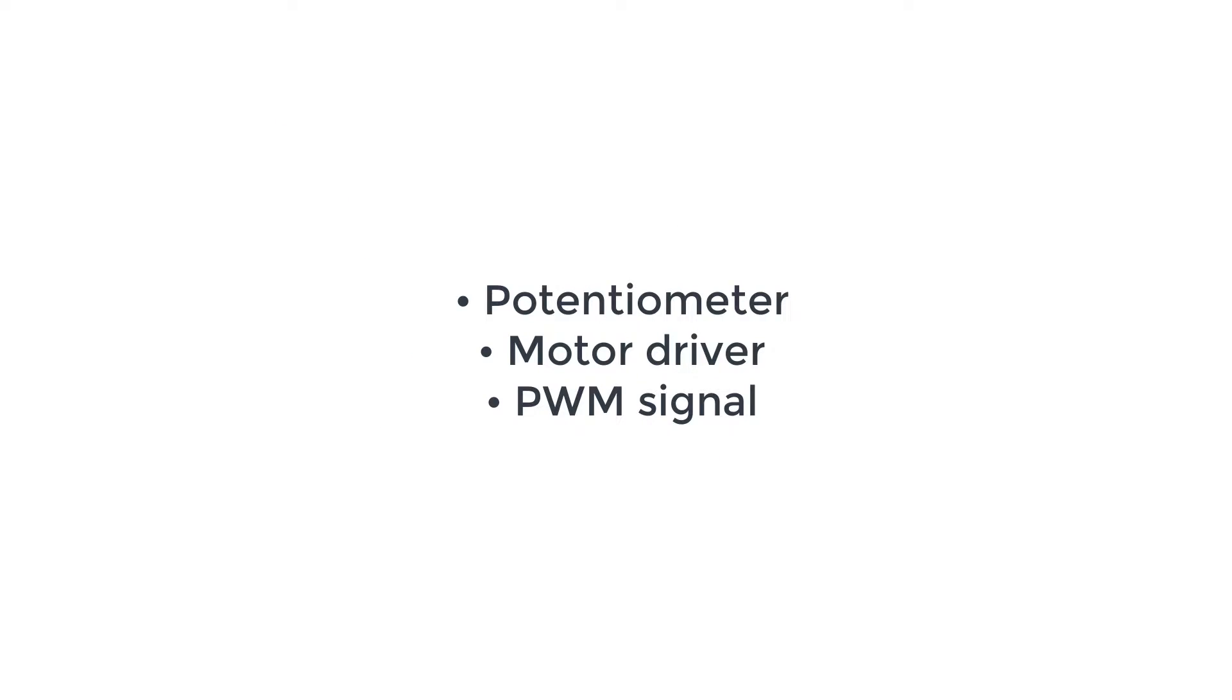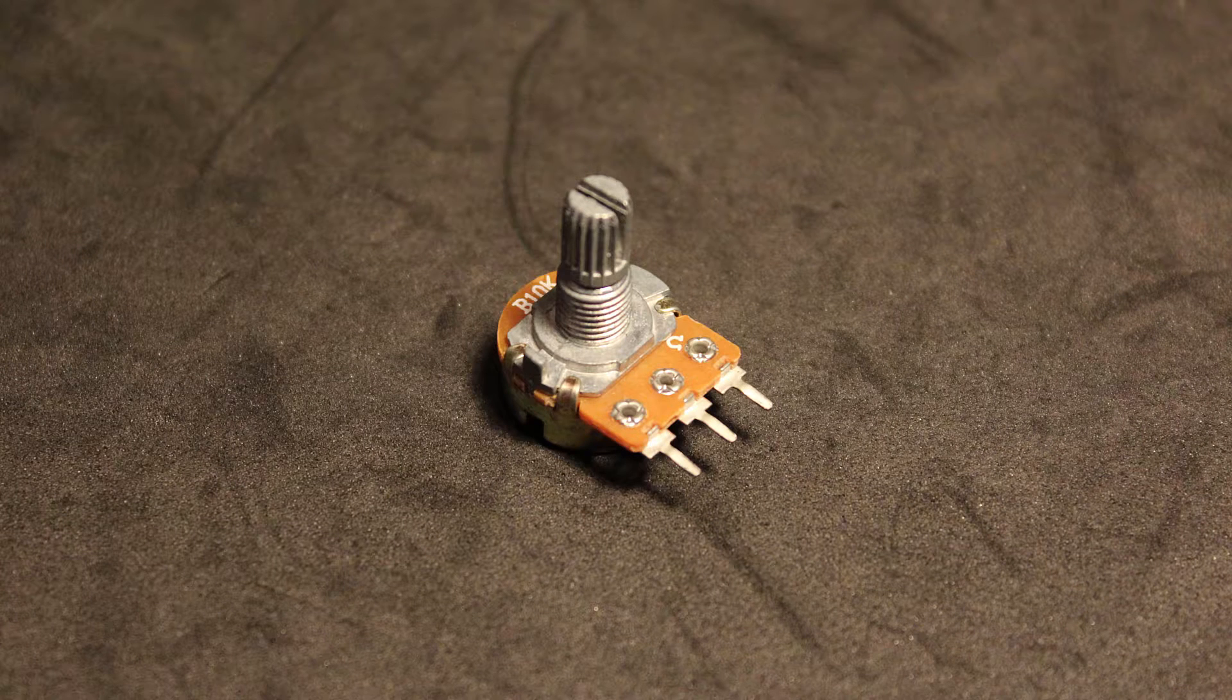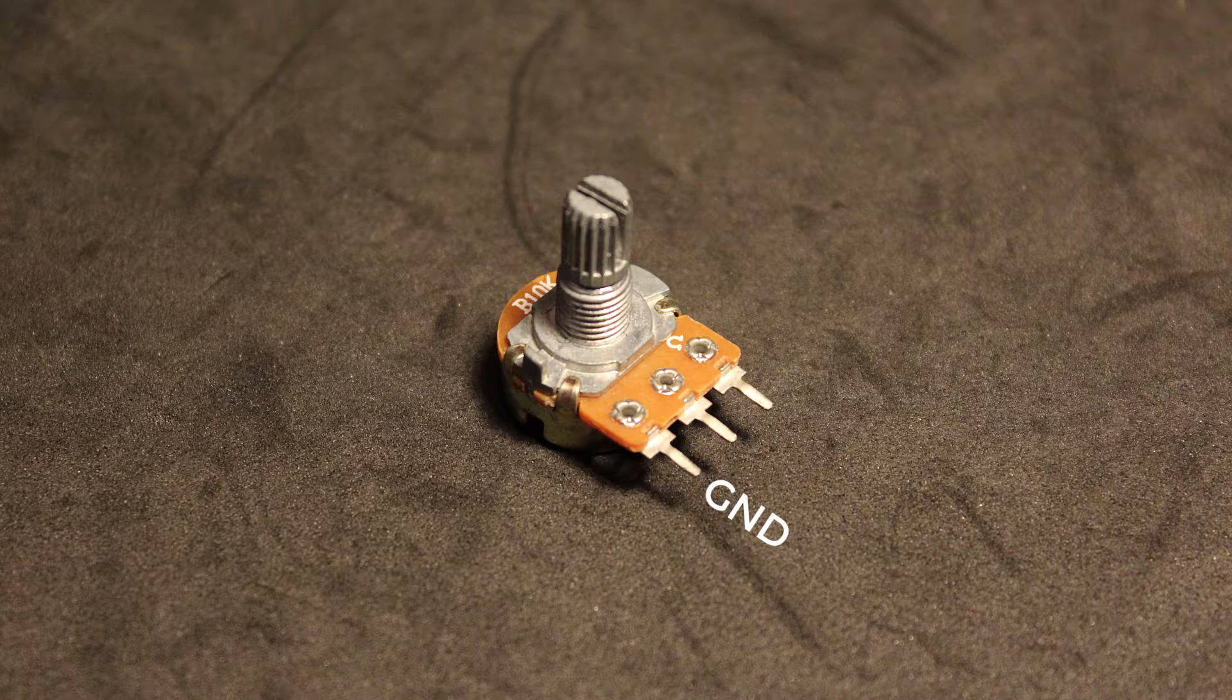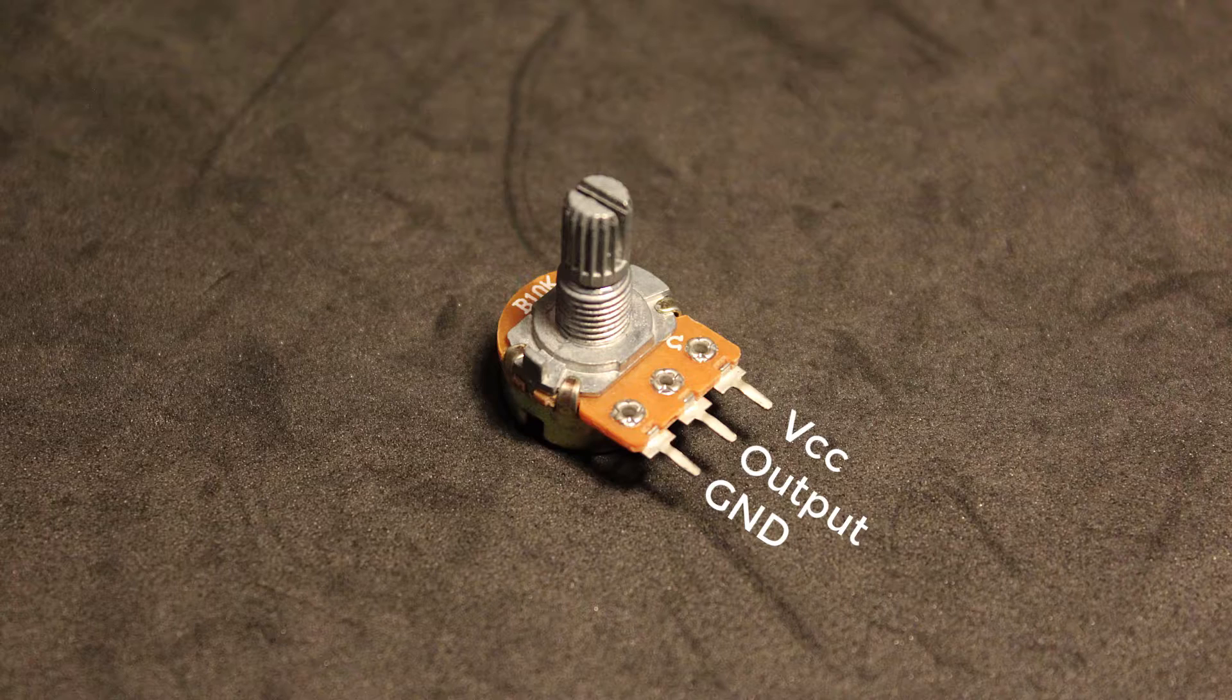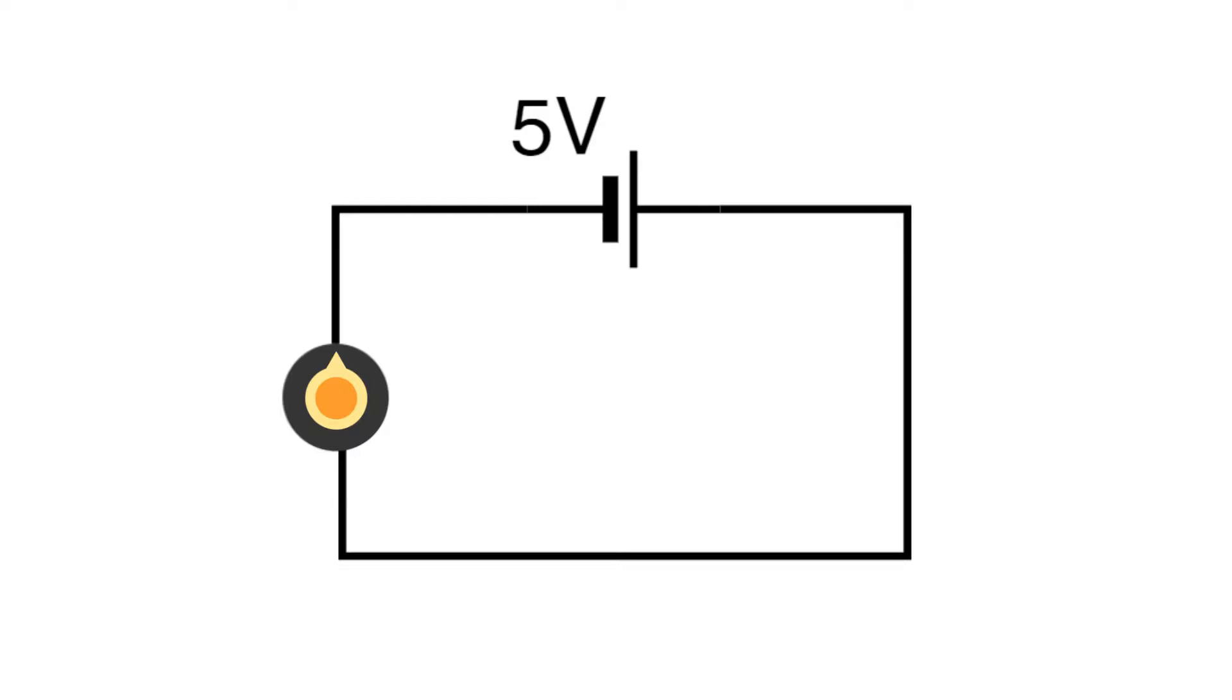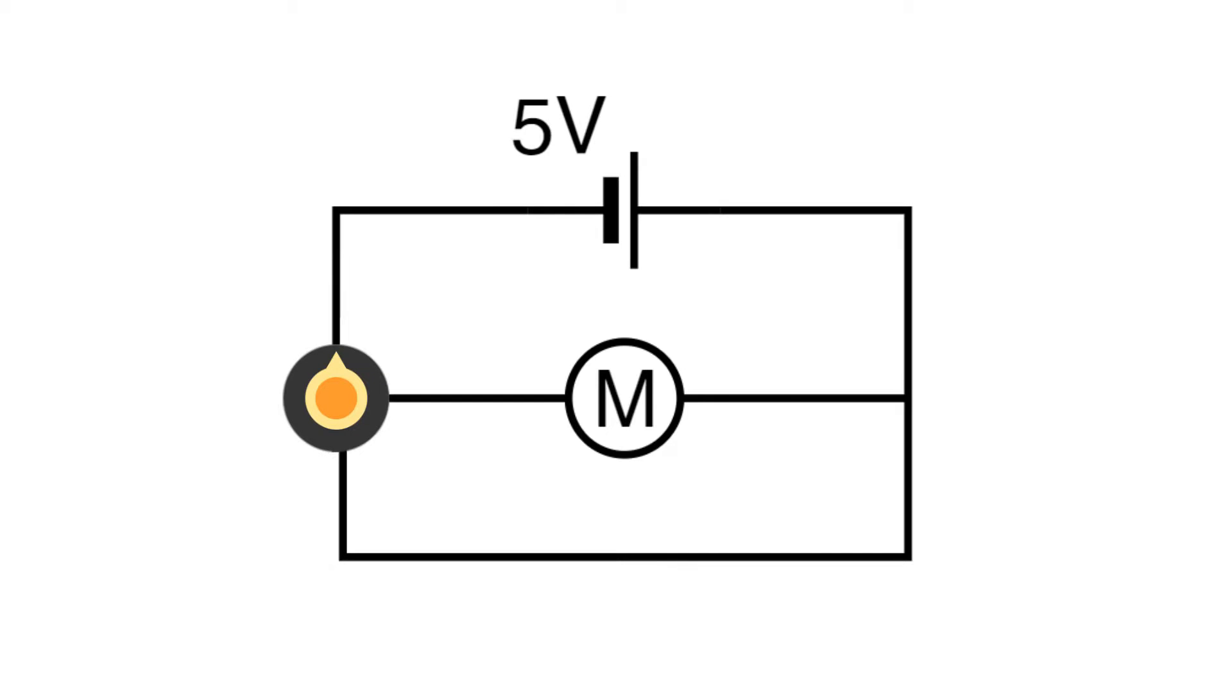There's multiple ways we can do this. The most simple way that first comes to mind is to use a potentiometer, which is pretty much a variable resistor. A potentiometer has three pins: ground, output, and VCC. Let's say we have a 5 volt power supply and we connect a potentiometer to ground and VCC, and the output goes to a DC motor.